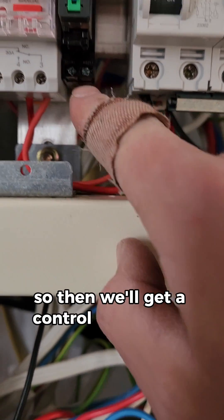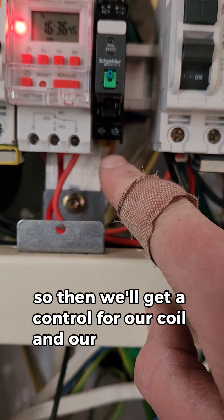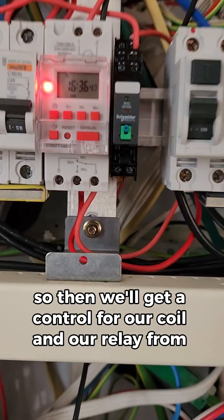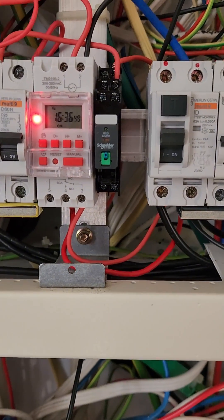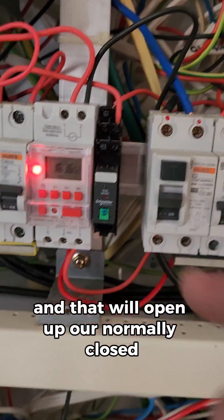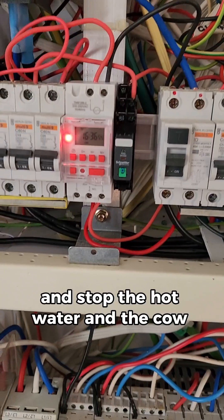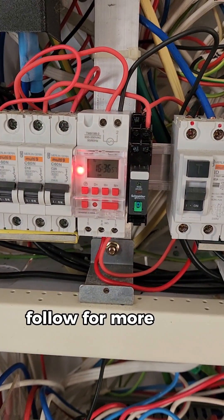So then we'll get a control for our coil and our relay from the vac pump, and that will open up our normally closed and stop the hot water and the cow shed running at the same time.